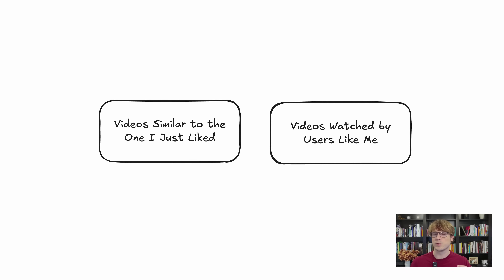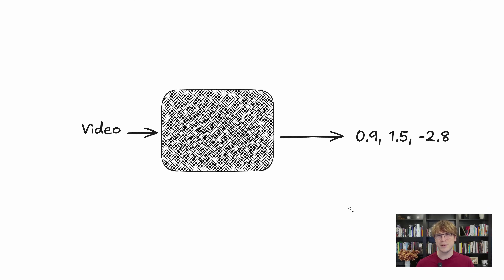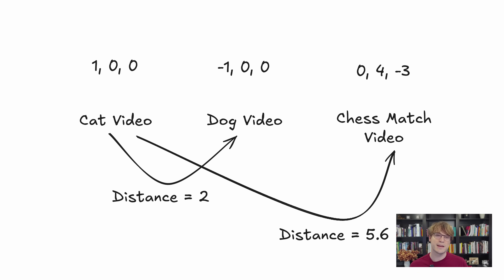Before we move on, there's one other type of candidate generator worth discussing. Top videos or videos from subscribed channels are easy to get with basic database queries. But how can I build candidate generators for things like a video similar to the one I just liked, or videos watched by users like me? The answer is to use what are called embeddings — vectors of numbers. We have a function which takes in an input, in this case a video, and outputs an embedding or a series of numbers. These numbers are special in that videos with smaller distance — think of this like distance in 3D space — have some property. We could train our model so that videos liked by similar users are clustered together, or group them semantically based on content, or find videos which irritated the same people.